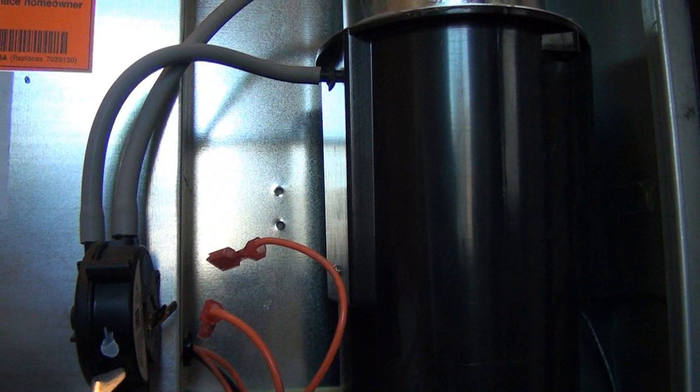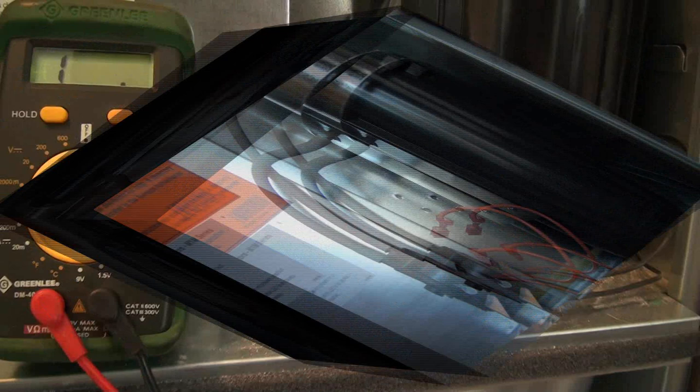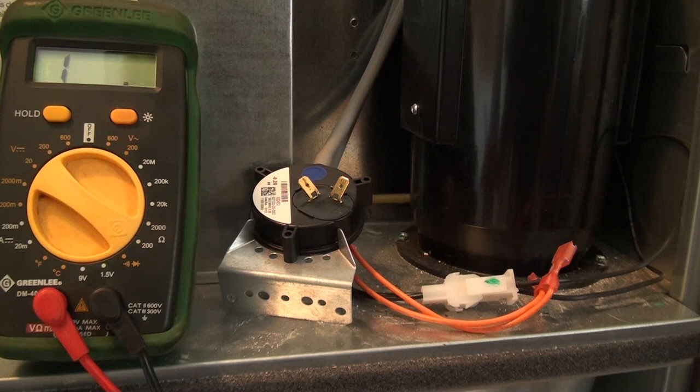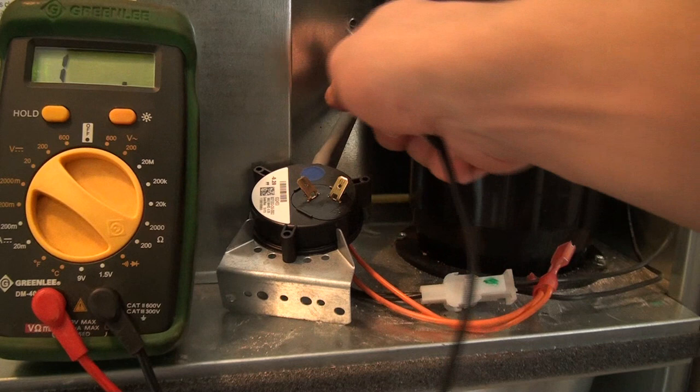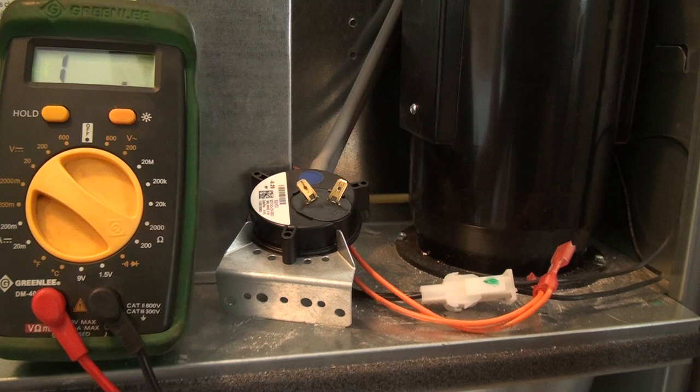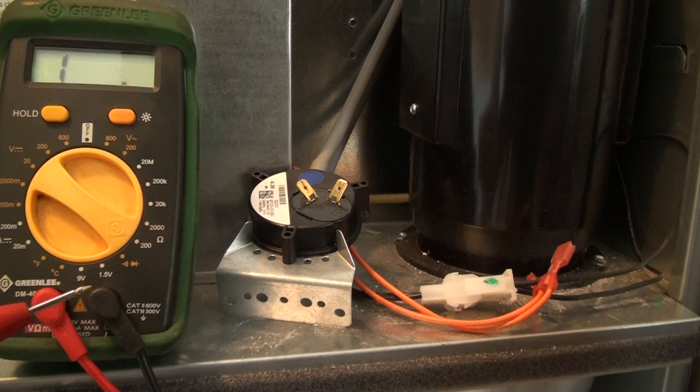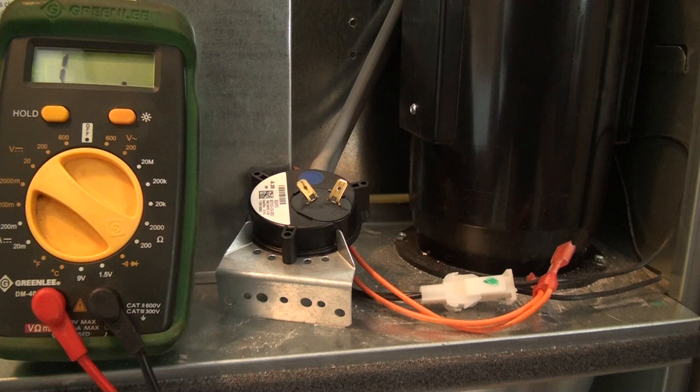Alright, so the first thing we did was we wanted to test the resistance across the switch. Because this draft inducer, basically the blower, is supposed to create a negative pressure and these vacuum tubes essentially, once there's a negative pressure, the switch should actually make contact. This is a safety mechanism so if your furnace is running or before it even starts it needs to make sure that it's got a proper draft and if it doesn't then the furnace won't fire.